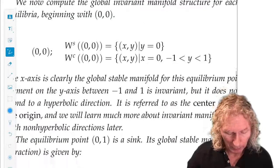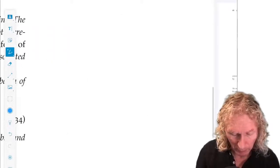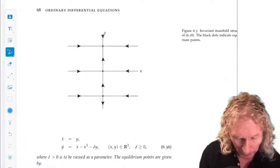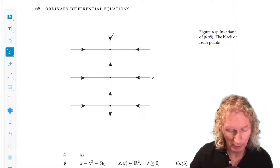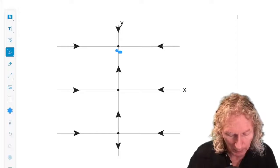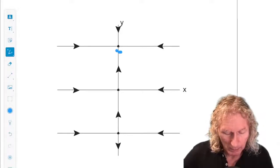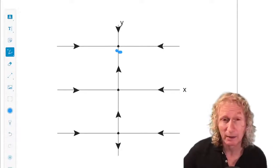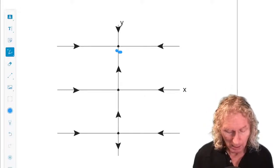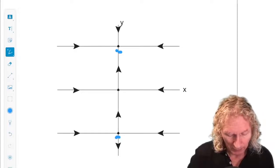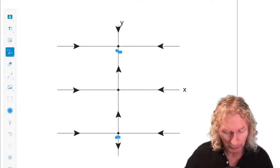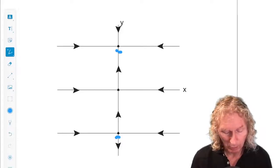Again, I have formulas for all of the bits and pieces of the global stable and unstable manifolds and so on. But let's just look at the structure that I've described. So x equals zero, y equals one is a sink. And the basin of attraction is y greater than zero. So x equals zero, y equals minus one is a saddle. And the global stable manifold is just the line, y equals minus one.